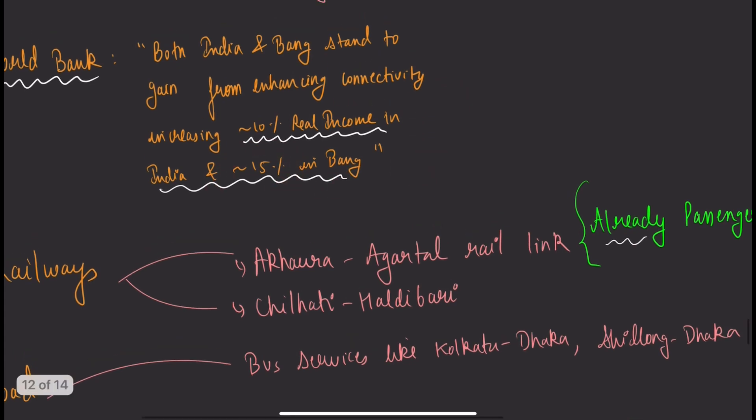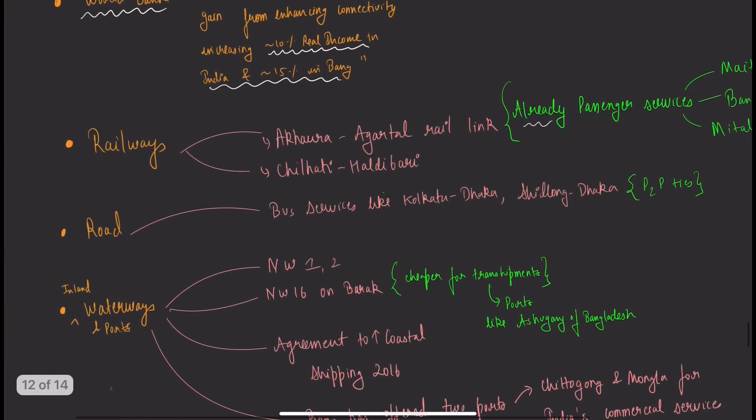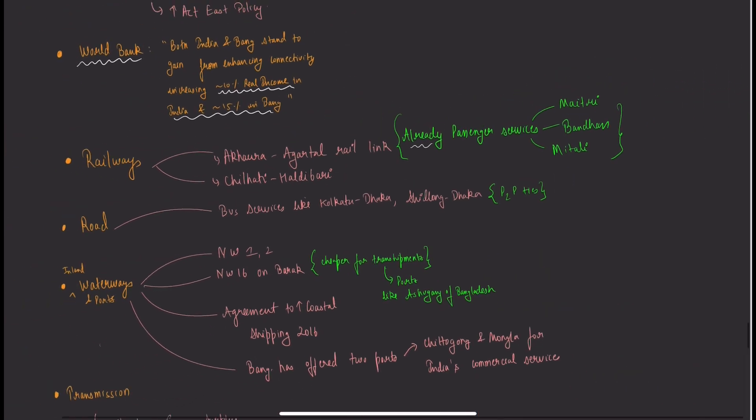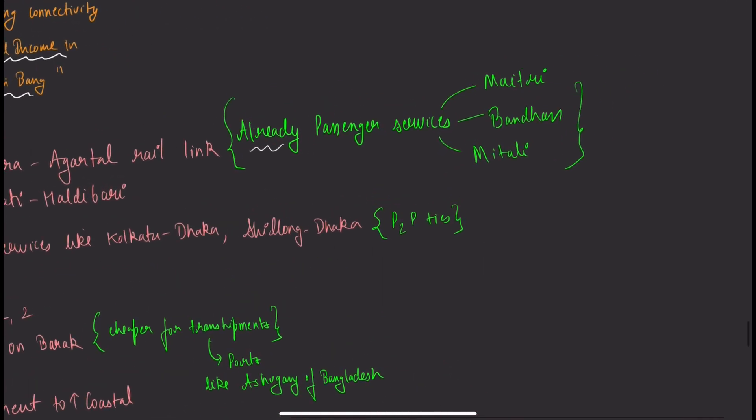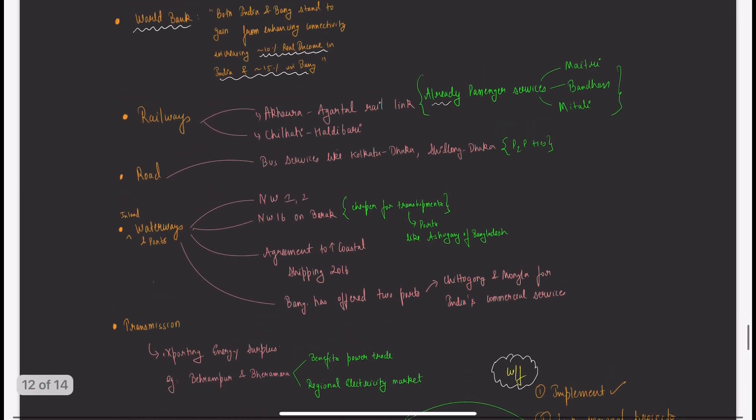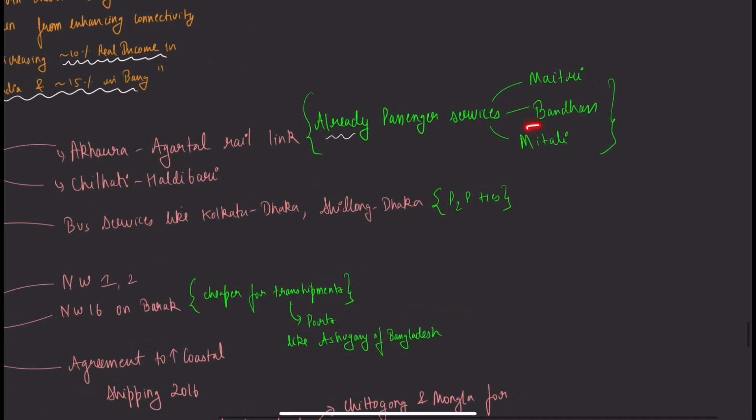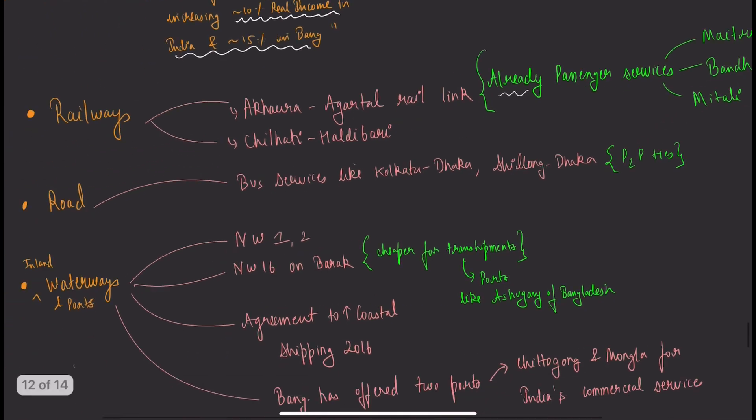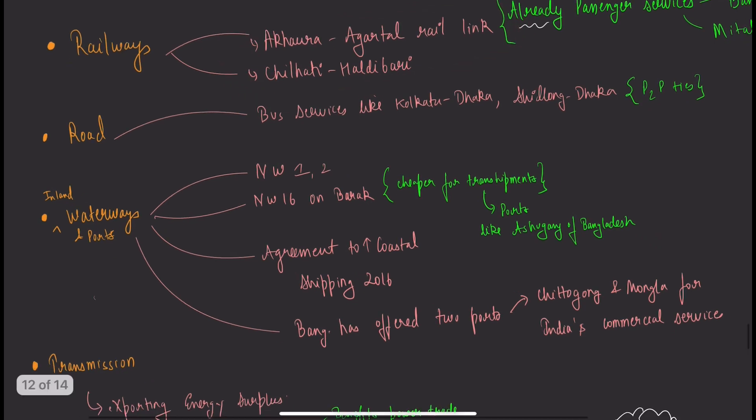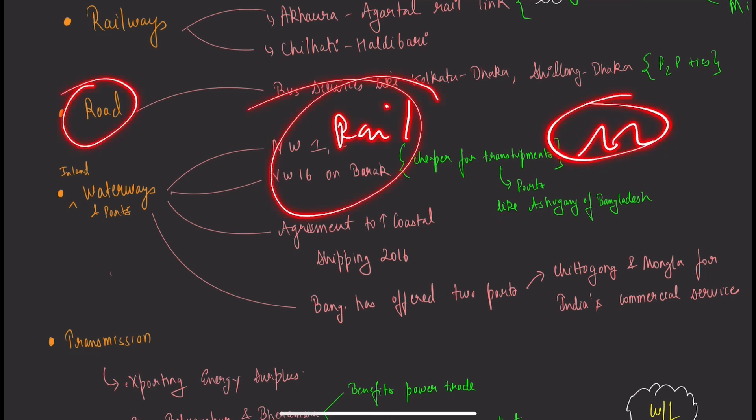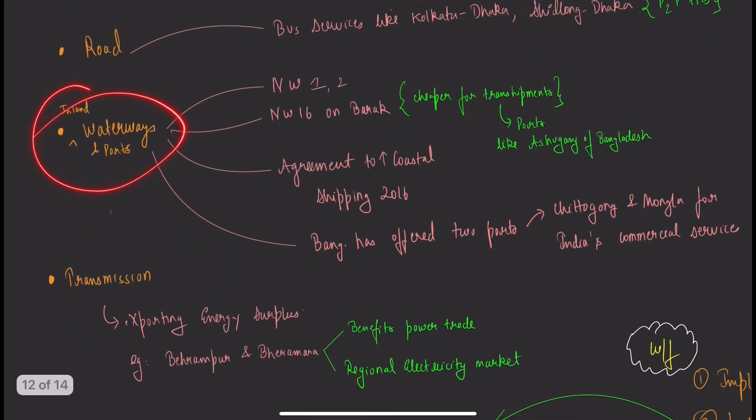In railways, we have Akhaura-Agartala rail link and integrated checkpoint. Chilahati-Haldibari is a recent project being developed together. Passenger services already running: Maitri, Bandhan Express, and Mitali Express between India and Bangladesh. For roads, increase bus service between Kolkata-Dhaka and Shillong-Dhaka, especially through hilly terrain where railway is costly.